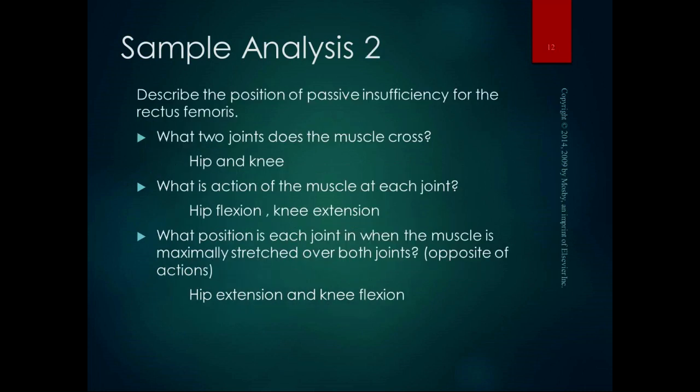For passive insufficiency of the rectus femoris, we go through the same process. It crosses the hip and the knee, doing hip flexion and knee extension. When the muscle is maximally stretched over both joints, we have to be in hip extension and knee flexion. That's our classic standing quadriceps stretch — where you grab your foot and extend the hip and flex the knee to stretch the rectus femoris.